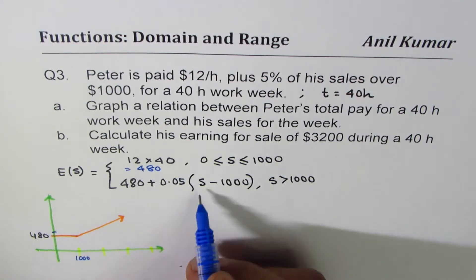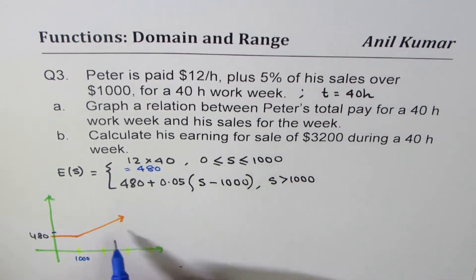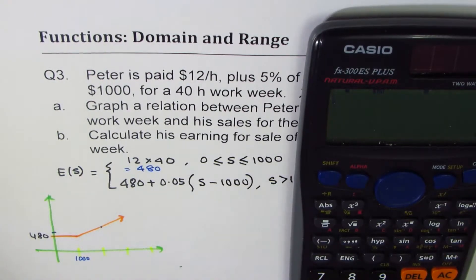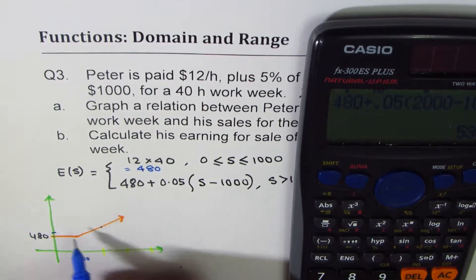Now if the sales is 2000, so we get, if the sales is 2000, in that case let me calculate the value. It'll be 480 plus 0.05 within brackets 2000 take away 1000, bracket close, equal to 530.